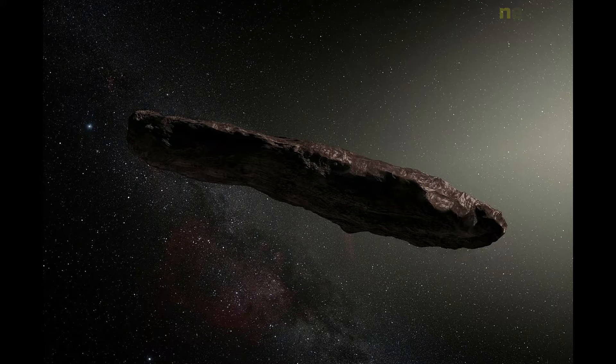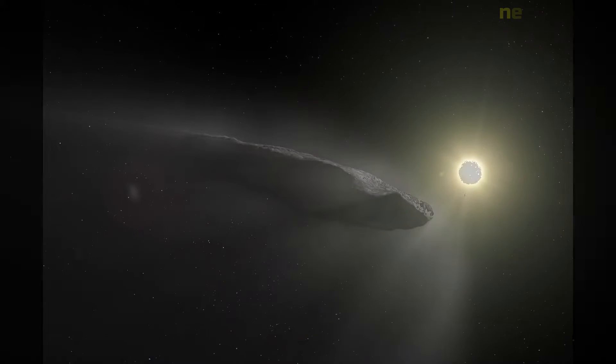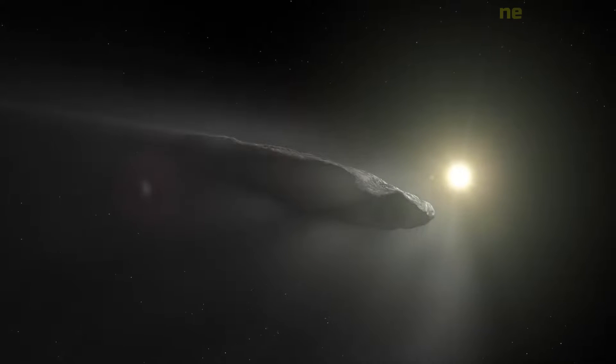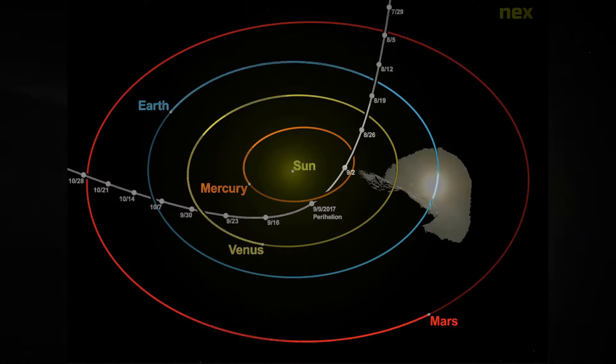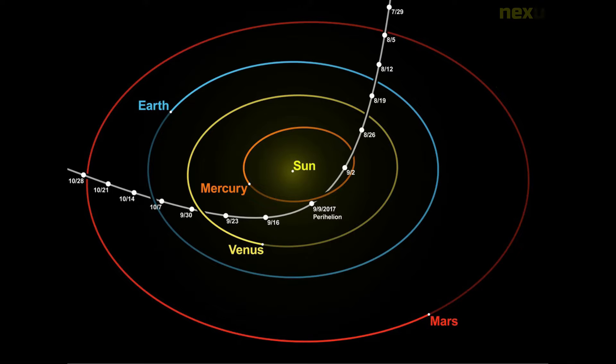Oumuamua entered the solar system from north of the plane of the ecliptic. The pull of the sun's gravity caused it to speed up until it reached its maximum speed of 87.71 km per second as it passed south of the ecliptic on the 6th of September.